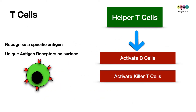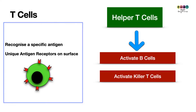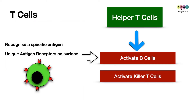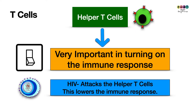There are millions of different types of helper T cells and they are all unique because they have a specially shaped antigen receptor on their surface that recognizes one specific type of antigen. What do helper T cells do? They activate B cells and they also activate killer T cells. Helper T cells are essential to a fully functioning immune system — without them the immune system is essentially paralyzed.